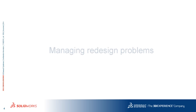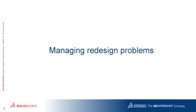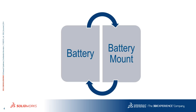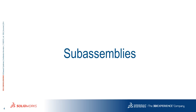Most likely, many of your components will go through various shapes before you decide on the final design. And because the components are assembled together, a change in one of them would have to be reflected in all the surrounding ones. One way to manage all this is to work with sub-assemblies.